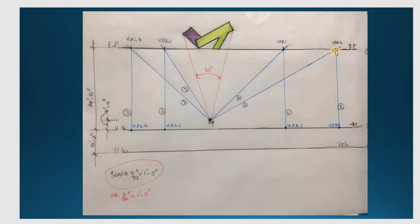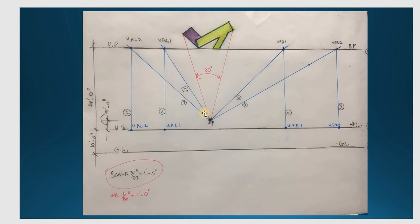When they cut with the picture plane, you project down 90 degrees to the horizontal line. These points belong to vanishing point right number 1 and vanishing point right number 2. I do the same thing with the left side. From the standard point, I create a line parallel with the purple one. When it cuts the picture plane, I project down 90 degrees to the horizontal line. I call that vanishing point left number 1.